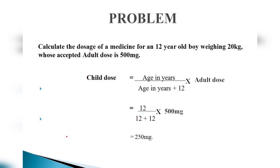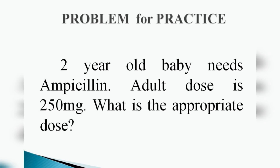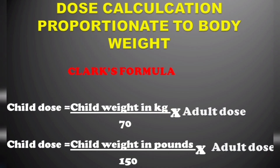Here is a practice problem: a two-year-old baby needs ampicillin, and the adult dose is 250 mg. What is the appropriate dose? Put the formula in the comment section and tell me the answer. Next, dose calculation proportionate to body weight uses Clark's formula: child dose equals child's weight in kg divided by 70, multiplied by the adult dose.